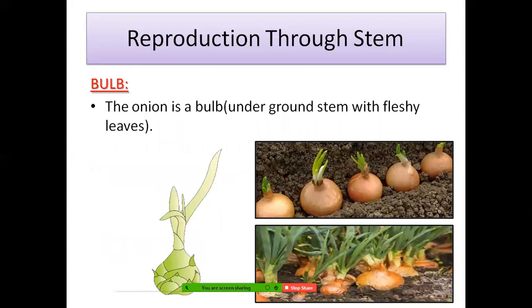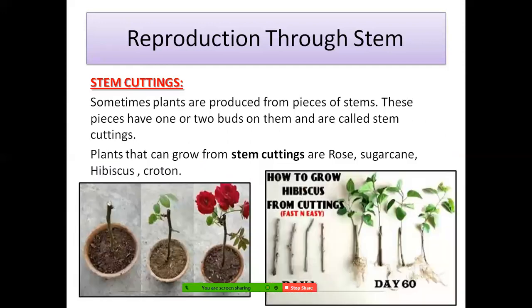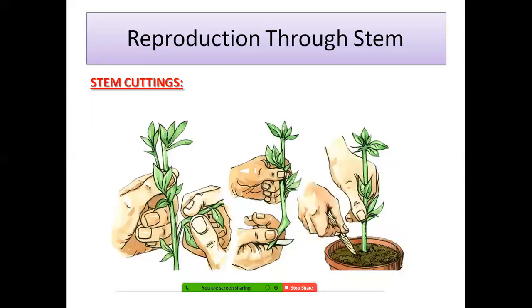Onion is a bulb, and this bulb grows into a new plant. Sometimes plants are also produced from pieces of stems. These pieces have one or two buds on them and are called stem cuttings. Plants that are grown from stem cuttings include rose, sugarcane, hibiscus, croton, and money plant. A money plant can grow from a stem — you simply need one mature stem with one or two buds, and it will grow into a new plant.